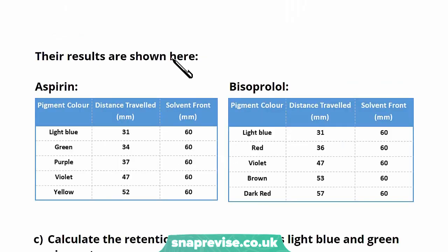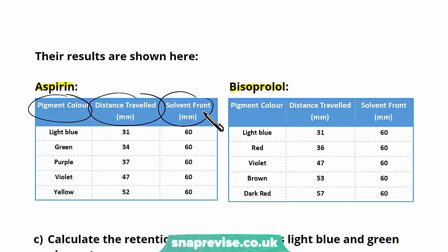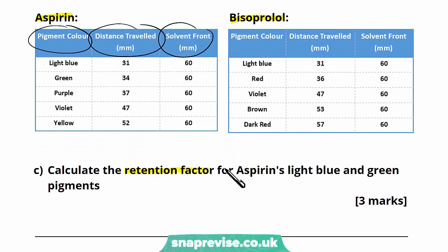The results are shown here. We've got the aspirin table on the left and the bisoprolol table on the right. Each table states what we would expect for a chromatography experiment — the colour of each pigment observed, how far they moved, how far they moved compared to the solvent front, and how far the solvent front itself moved. Part C says calculate the retention factor for aspirin's light blue and green pigments. Always read the question word for word to make sure you've got the right table, the right pigments, and you know exactly what's being asked.